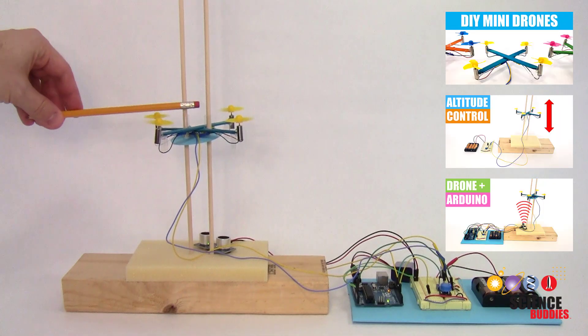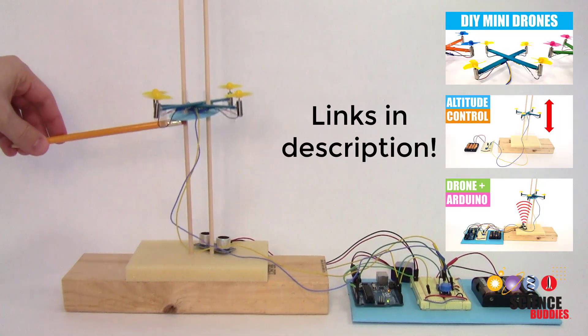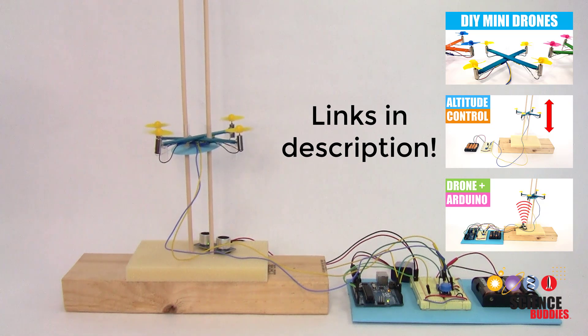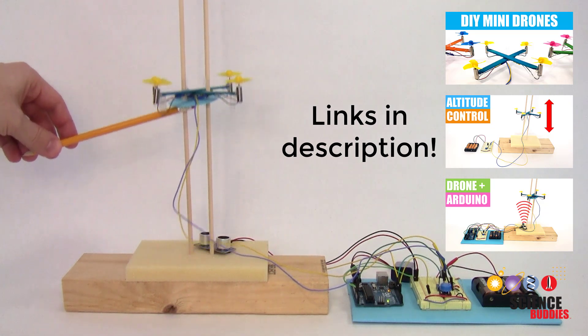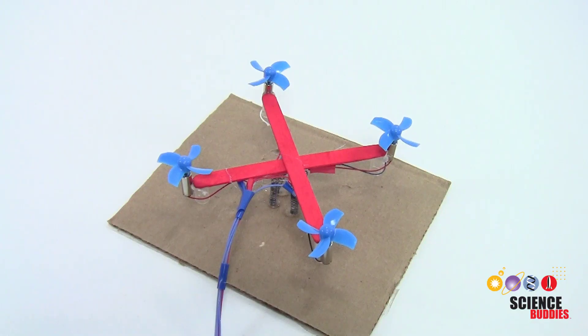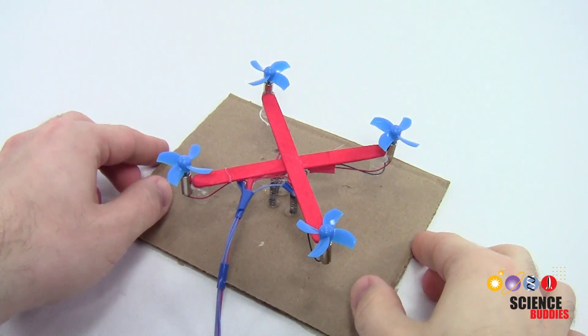Several previous videos in this series, which you can find linked in the description below this one, show you how to build the mini popsicle stick drone and mount it on vertical guide rails so you can control its altitude. However, those guide rails prevent the drone from rotating.